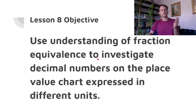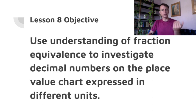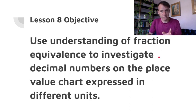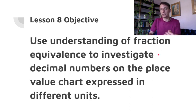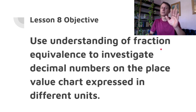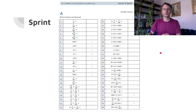We know that already — for example, one tenth equals ten hundredths. We're going to use that to investigate decimal numbers on the place value chart expressed in different units. For example, if you had eleven tenths, that would be one hundred ten hundredths — which makes sense, like if you had eleven dimes, that would be one hundred ten pennies. But we'll get to that.